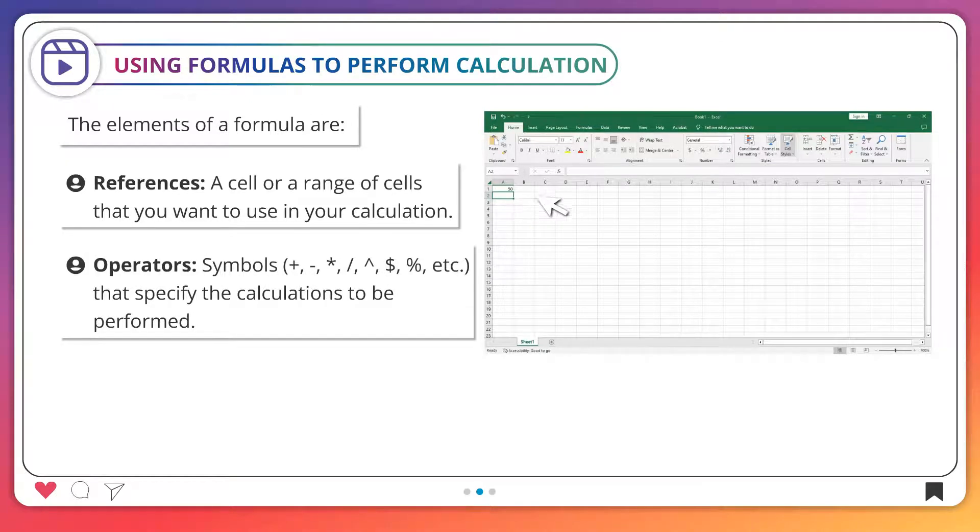Operators: symbols plus, minus, multiply, divide, exponent, dollar sign, percentage, etc. that specify the calculations to be performed. Constants: number or text values that do not change.